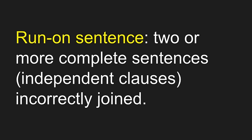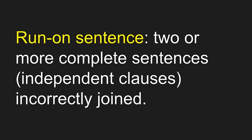A run-on is two or more complete sentences incorrectly joined. Remember, a complete sentence is sometimes called an independent clause — they are the same thing. Here are two examples. 'Finn wears antlers on very special occasions she is always embarrassed' — two sentences with nothing joining them; this is also called a fused sentence. The more common error I see in student writing is the comma splice: 'Finn wears antlers on her head but she is always embarrassed' — missing the comma between the two sentences.